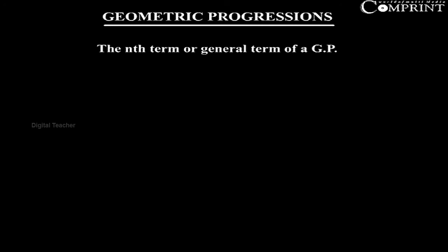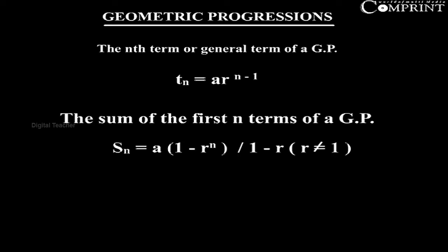The nth term or general term of a GP: tn = a × r^(n-1). The sum of the first n terms of a GP: Sn = a(1 - r^n)/(1 - r) where r ≠ 1.